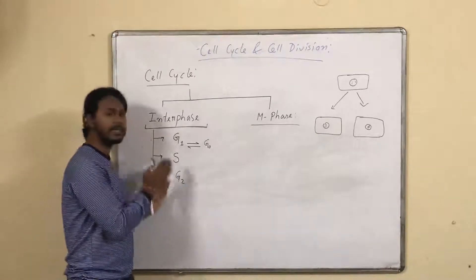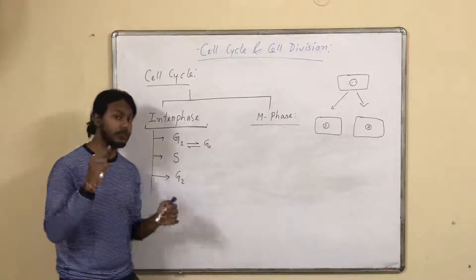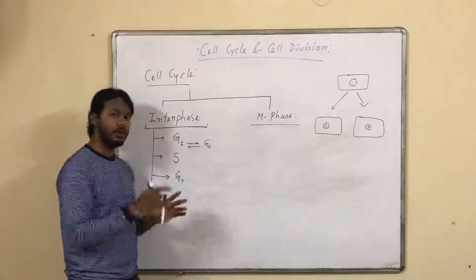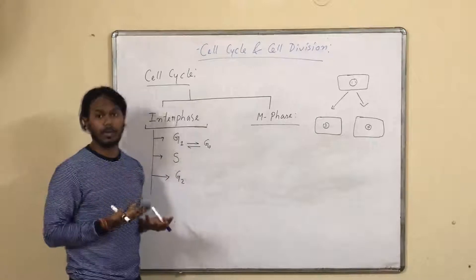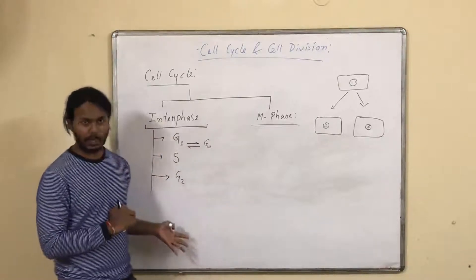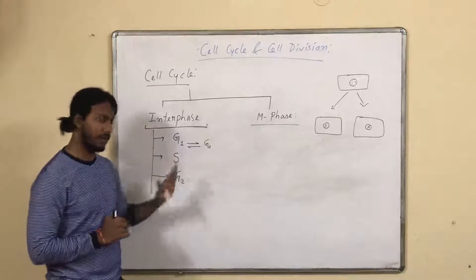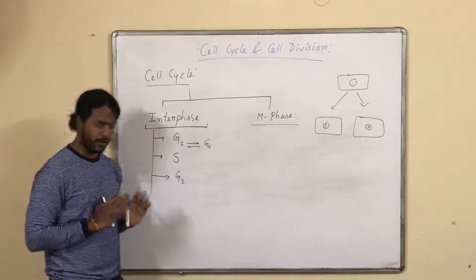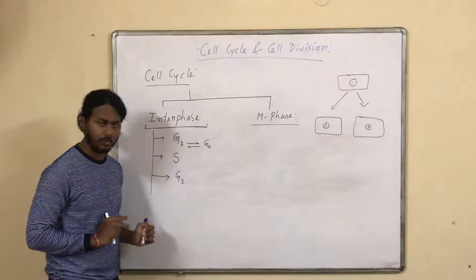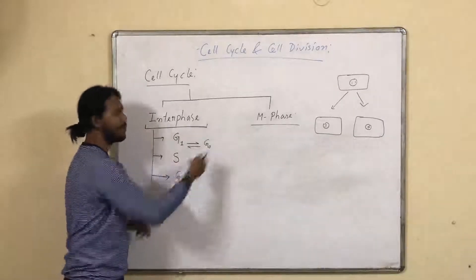So all these things happen in interphase. These are the busiest phases in the cell — it appears as a quasi-resting phase, but actually the cell is not resting at all. Internally, molecularly, the cell is truly busy because it has to prepare itself. This thing occurs in interphase.